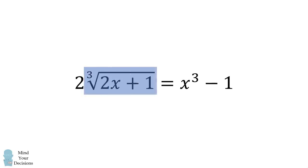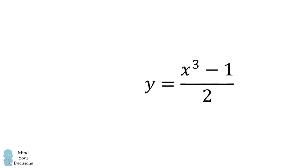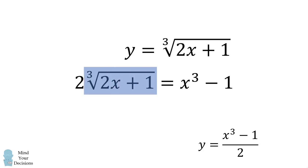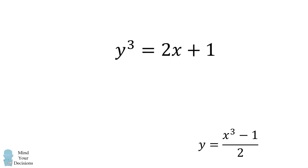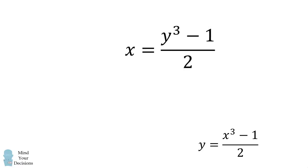First, we will make the substitution that y is equal to the cube root of the quantity 2x plus 1. We will substitute that into the equation, and we will solve for y by dividing both sides of the equation by 2. We will then go back to the definition of y and solve this equation for x. We can cube both sides, then subtract 1 from both sides, and divide both sides by 2. We get x in terms of y.